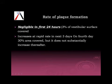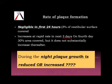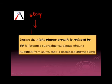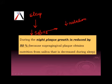Regarding the rate of plaque formation: plaque formation is not very fast in the first 24 hours, although it increases rapidly for the next 3 days, after which it does not increase much. During the night, plaque growth is reduced by 50% because supragingival plaque obtains most of its nutrition from saliva, and saliva is decreased during sleep. So sleep decreases saliva, which decreases nutrition, which decreases plaque.